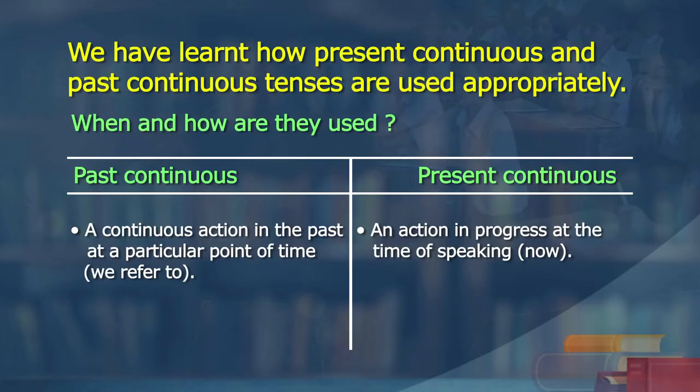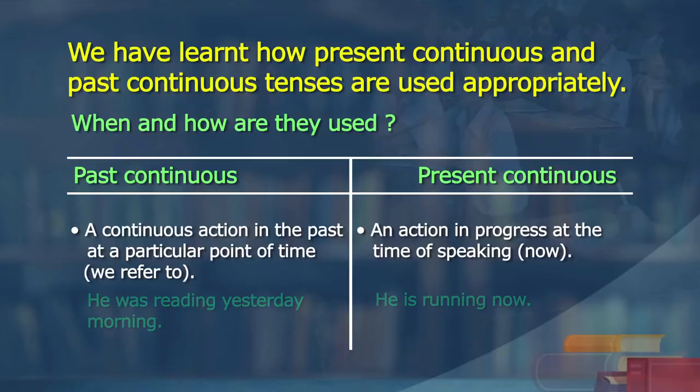Past continuous: a continuous action in the past at a particular point of time we refer to. I was reading the newspaper when you called me. I was going to the market when I met him. It is a particular point of time where the action was going on continuously for some time. But now, I am talking to you - this action is also going on right now, so present continuous. He was reading yesterday morning. He is running now. We are sitting here talking to our learners. Our learners are watching.